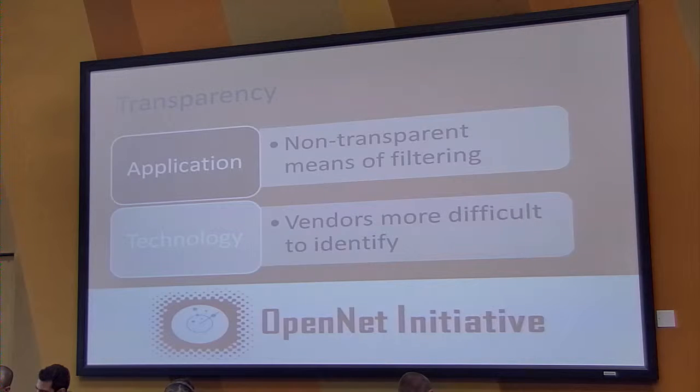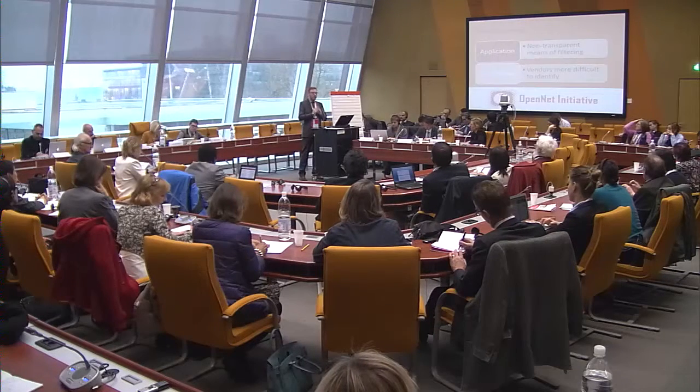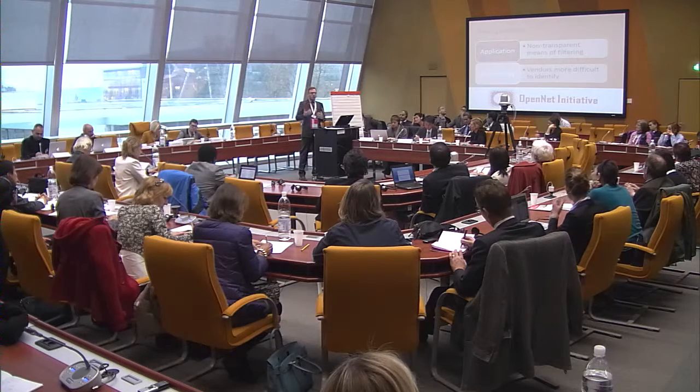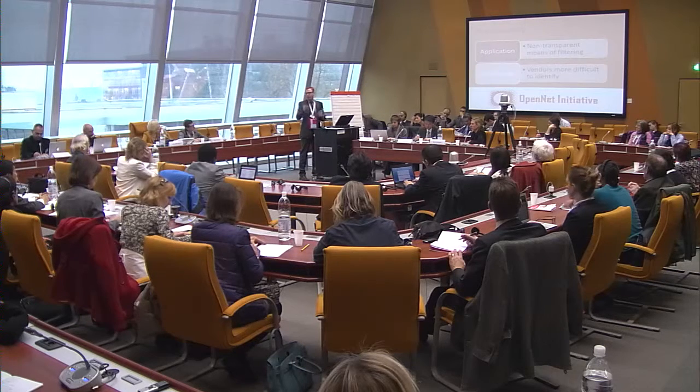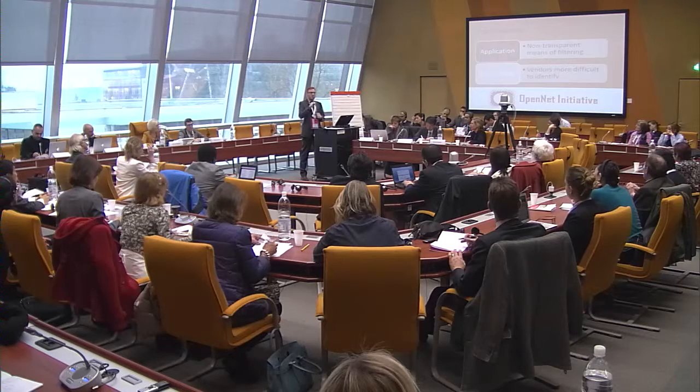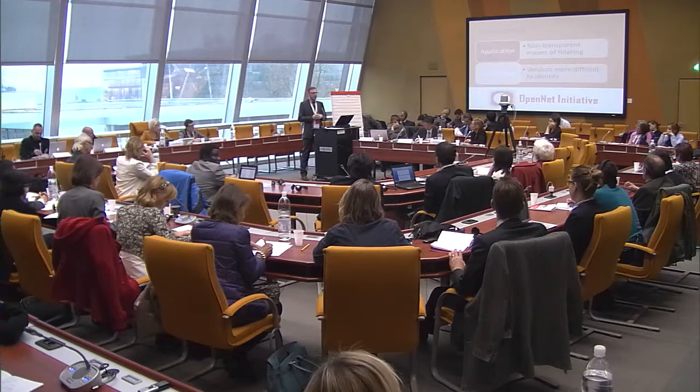Importantly, we also see a decrease in the transparency of how internet censorship and surveillance are applied. In many cases, especially in the early days of our research, if you attempted to access a forbidden website in a censored country, you got a very clear message on your screen — this website is not accessible — sometimes even citing the specific law or Ministry of Communications order. But we find that's not always the case anymore. In many countries, filtering is not transparent, and it may be very challenging for users to distinguish between a deliberate act to censor content and simple technical errors. The website may simply appear to be down.